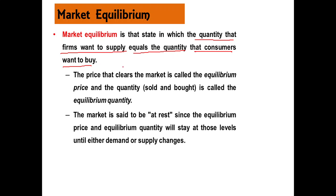The price that clears the market — meaning there is no shortage and no surplus, it is just equal — is called the equilibrium price. The price which brings equality between demand and supply is known as equilibrium price, and the quantity bought and sold is called the equilibrium quantity.